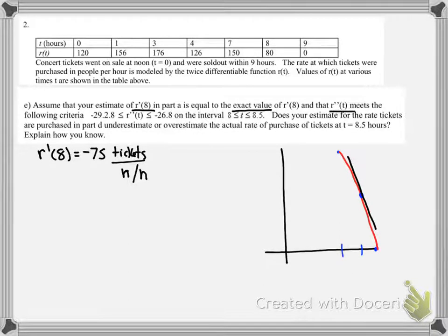And our double prime meets the following criteria, that it is between negative 29.3 and negative 26.8. So for sure, our double prime of T is less than 0 between 8 and 8.5.